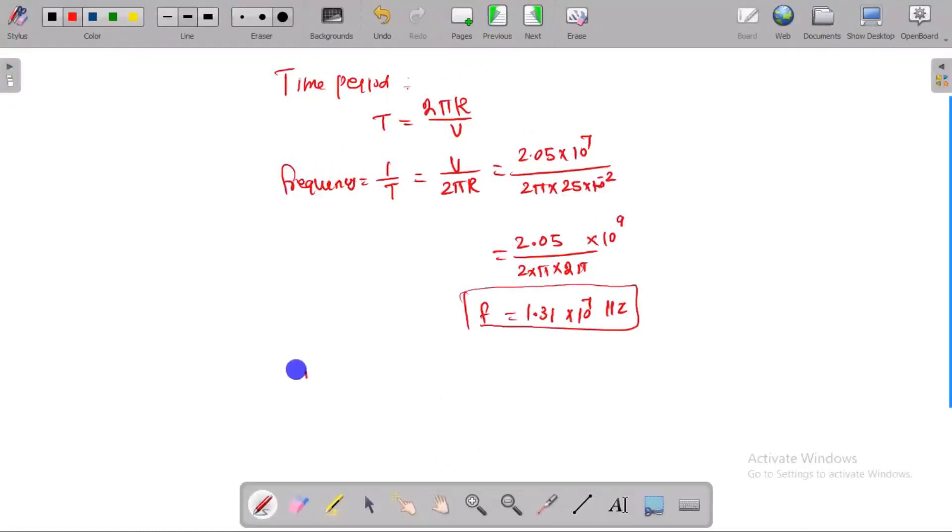Time period T = 1/f = 1/(1.31 × 10⁷), which gives 7.63 × 10⁻⁸ seconds.